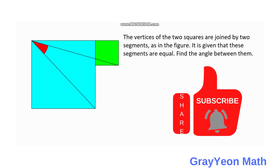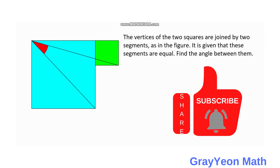While talking to the manual part, when I ask for this problem: the vertices of two squares are drawn by two segments as in the figure. It is given that these segments are equal. Find the angle between them.